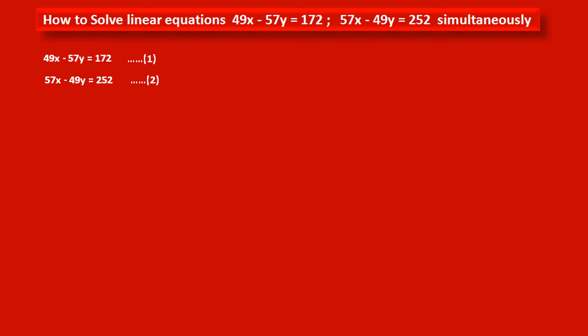In these two equations, one special thing is here. The coefficient of x in the first equation is 49, and in the second equation, the coefficient of y is also 49 with opposite sign. Similarly, the coefficient of y in equation 1 is -57, and the coefficient of x in equation 2 is 57. That means some special pattern is given here, and so to solve such type of problems, we have to use a special technique.